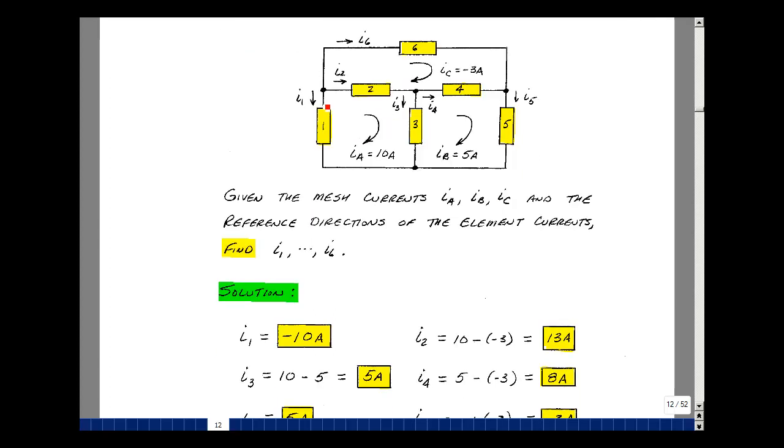Now let's start with i1. So i1 is going in this direction, and here's the mesh current i_a. It's actually going in the opposite direction. Value of i1 is negative 10 amps.